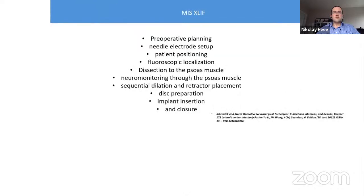Another case of a patient who underwent stabilization L3-S1 and now had adjacent segment disease with instability L2-3 and herniated disc L2-3 on the right side. This patient underwent an extension of the spinal construction and XLIF at two heights: L2-3 and L1-2. Post-operative CT and X-ray showed increased disc height, correction of the deformity, and increased neuroforaminal area with direct and indirect decompression. XLIF can be performed as open surgery, endoscopic surgery, or minimally invasive surgery.